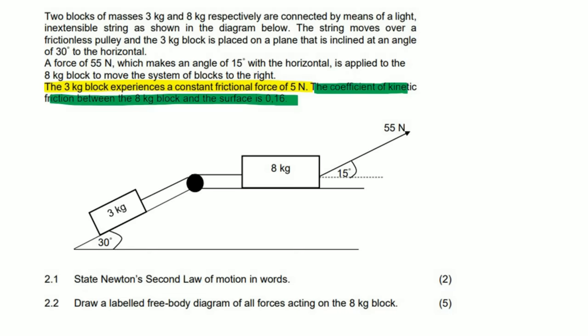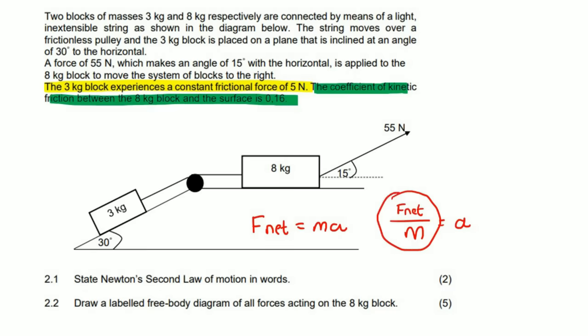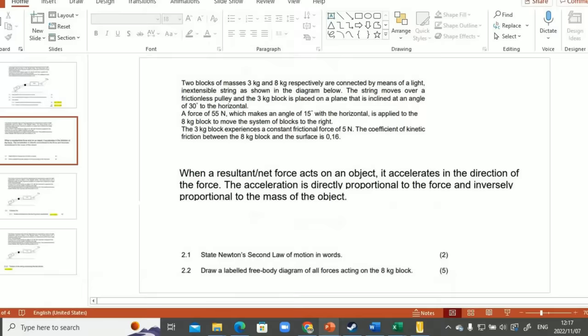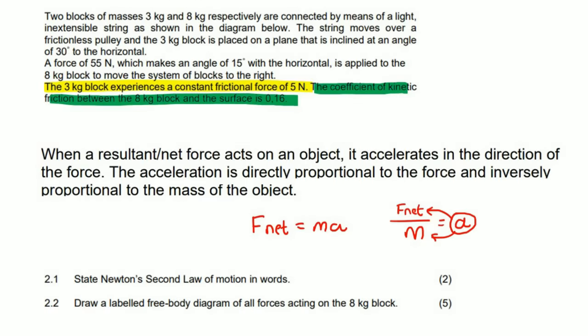The first question says: state Newton's second law. Before we get into the definition, let's look at the equation F net equals MA. Getting A by itself gives F net over M. This helps you remember the definition: acceleration is directly proportional to the net force — because it's on top — and inversely proportional to the mass — because mass is at the bottom.